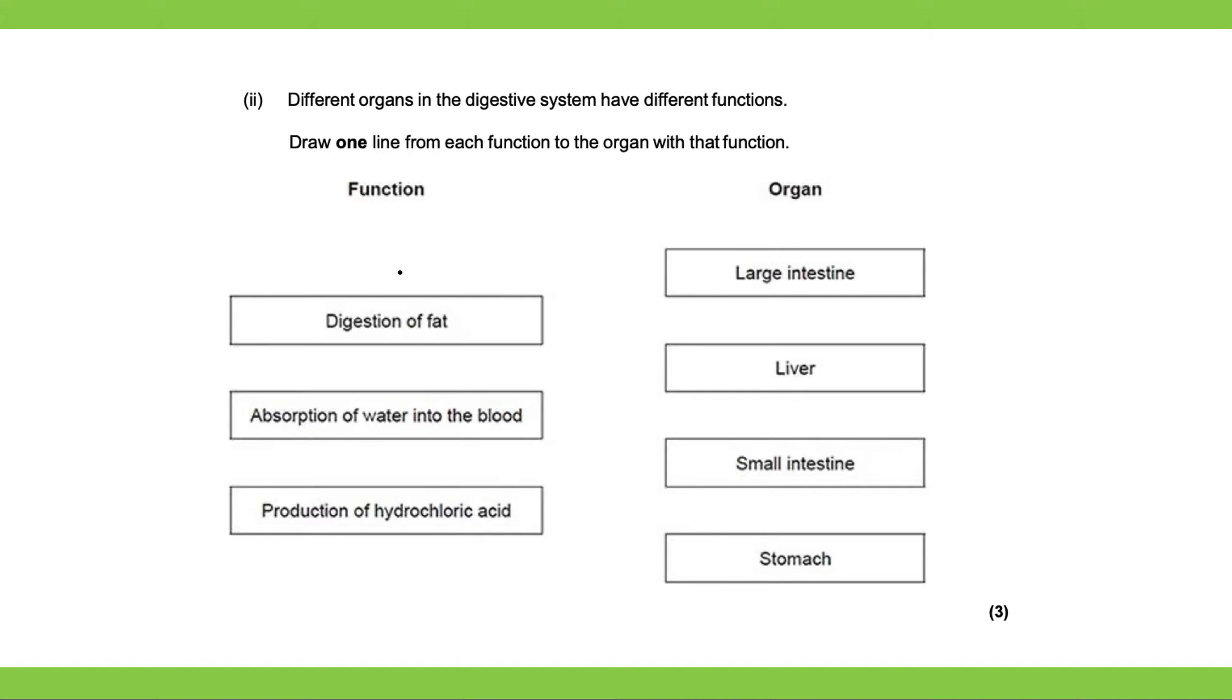So the digestion of fat, where does that happen? The digestion of fat, as we looked at in our previous video, happens in the small intestine. Absorption of water into the blood, where does that happen? Well, that happens in the large intestine.